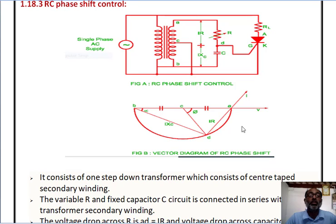RC phase shift control. A figure shows the RC phase shift control. It consists of one step down transformer whose secondary winding is center tapped.